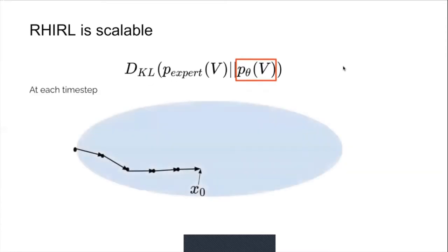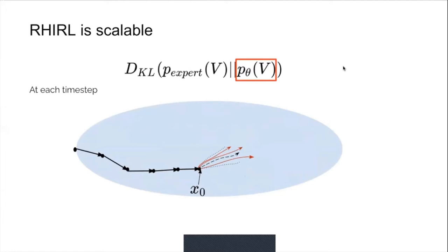At each time step, we have N expert demonstrated control sequences. First, we sample M control sequences from the base distribution. Then we apply MPPI using the samples from this base distribution and the current theta to compute the optimal control distribution. We then minimize the KL divergence between this optimal control distribution and the expert demonstration to update theta. Finally, we take the first control in this optimal control sequence and transit to the new state for the next round of optimization.